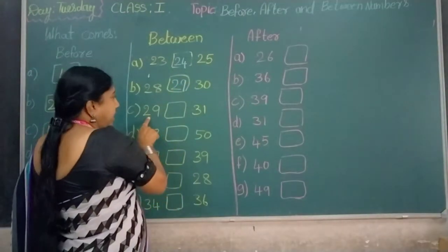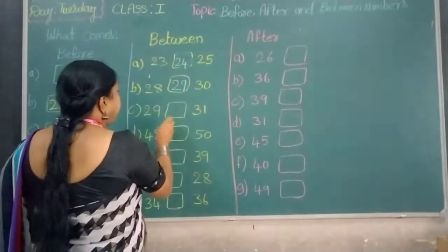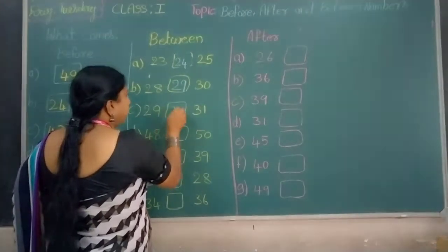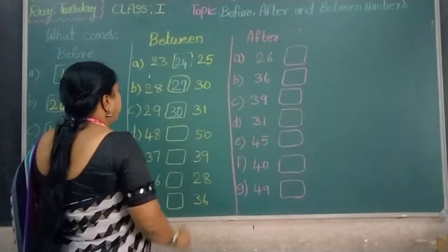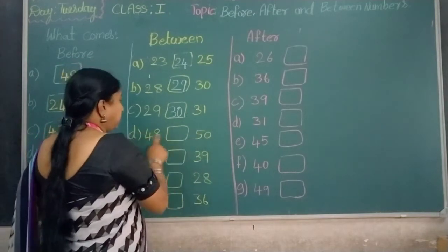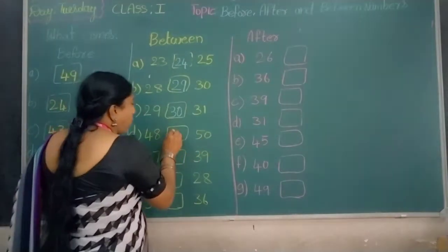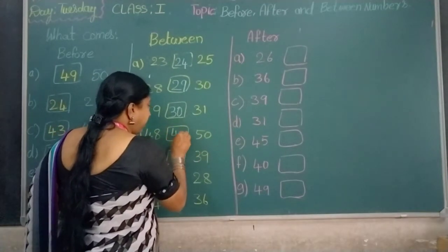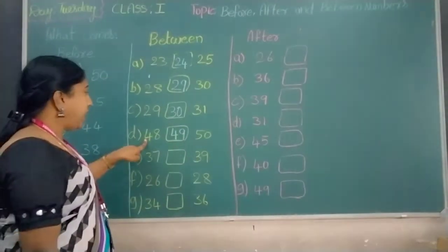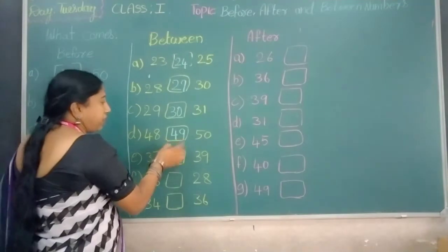Which number comes in between 29 and 31? Number 30. Which number comes in between 48 and 50? Number 49. 48 and 50, in between: 49.